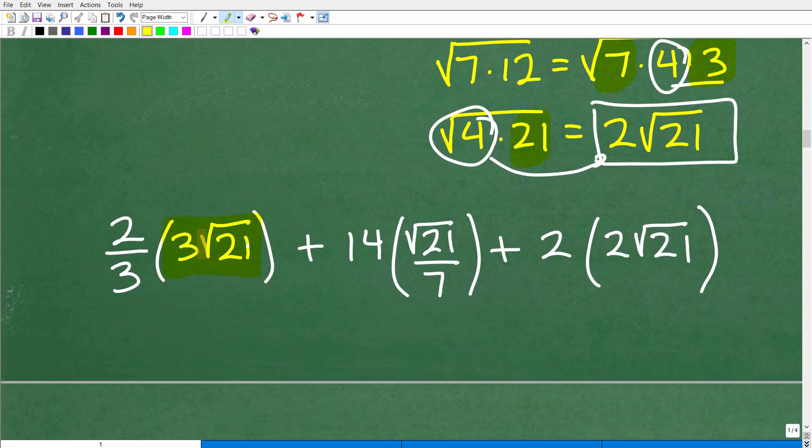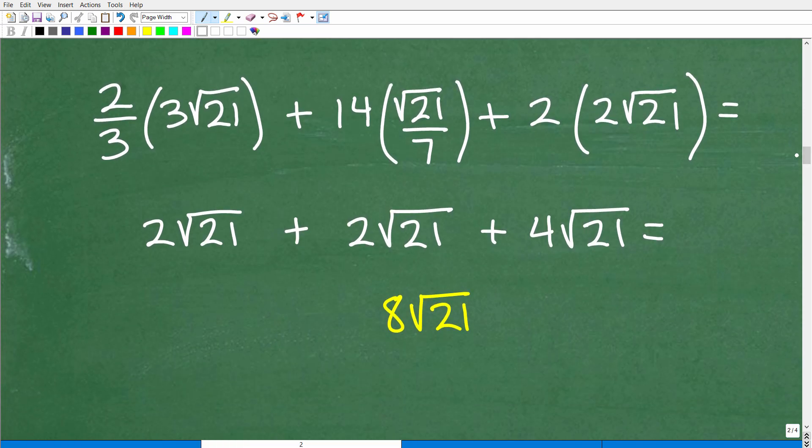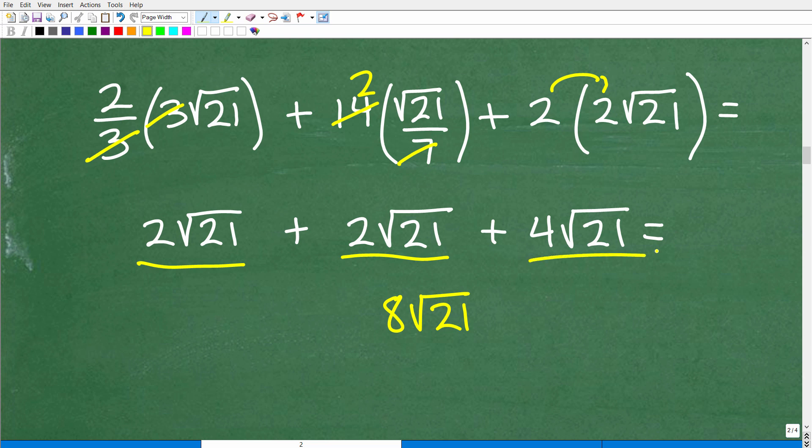So our first phase of this problem is to deal with all these square roots. Now we'll go ahead and address these numbers here, simplify that, and then add any like terms that we have. All right, so let's go ahead and take the next step. And we'll start off right here. So let's see here. I have 2 thirds times 3 times the square root of 21. Clearly, the 3 is cross-canceled. That's going to leave me with 2 times the square root of 21 right there. And then here I have 14 times the square root of 21 over 7. So 7 goes into 14, 2. So that's going to be 2 times the square root of 21. And then this is just going to be 2 times 2 times the square root of 21. So you're just going to distribute it into 2 times 2. That gives us 4 square root of 21.